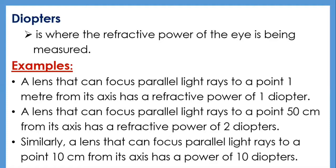If the lens is removed from the eye, its refractive power is about 150 diopters, but inside the eye it contributes only about 15 diopters when distant objects are viewed. This explains why removal of the lens due to cataracts does not lead to blindness — corrective lenses can be supplied to replace the lost refractive power and compensate for any optical abnormalities.